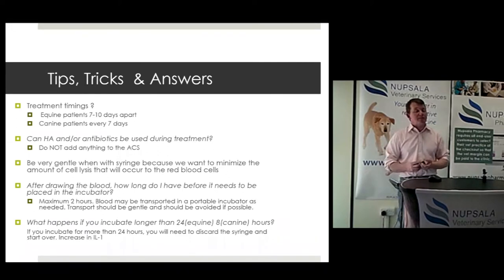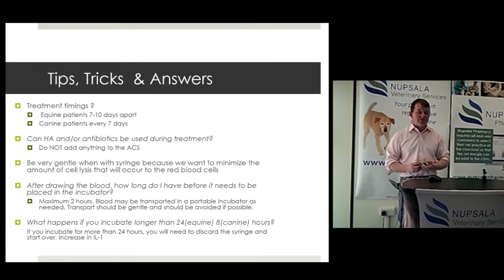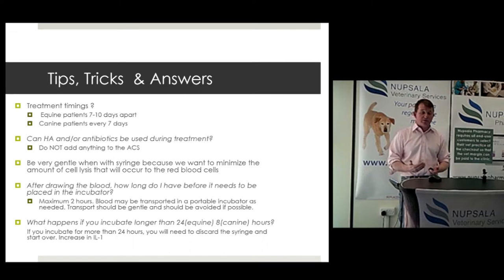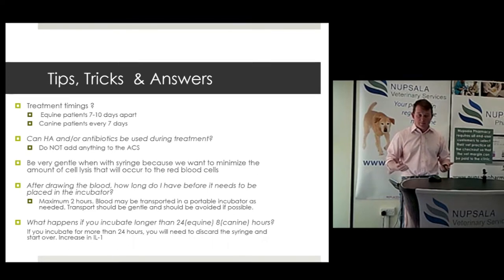A joint injection every seven days isn't routine in small animal patients. But if you are going to use ACS in a case where you can't use NSAIDs and you're trying to get inflammation under control in the joint, then do it every seven days — two or three injections would be best, but two is better than one.